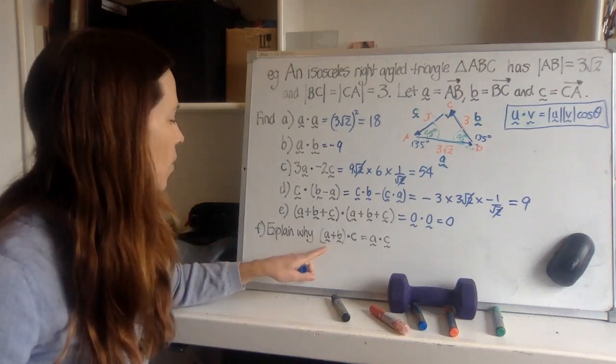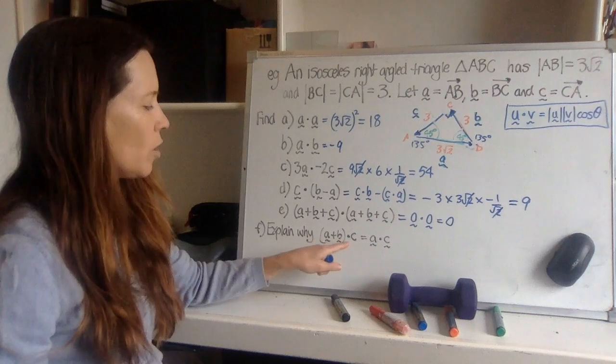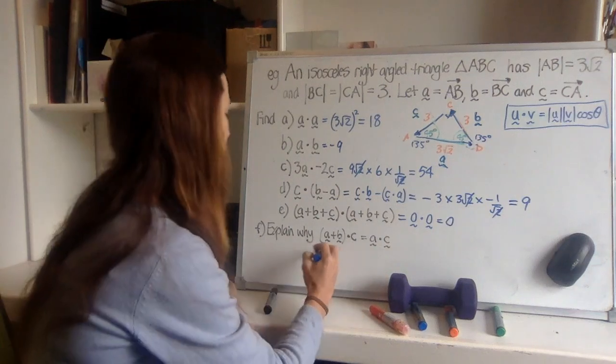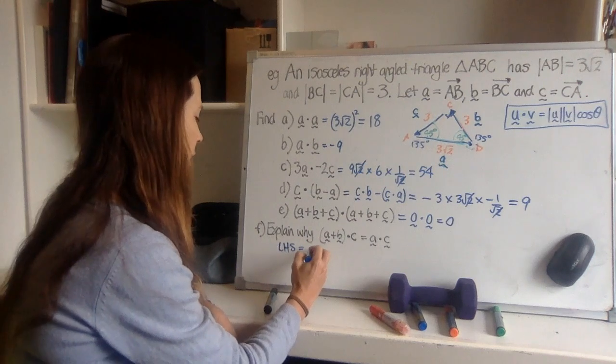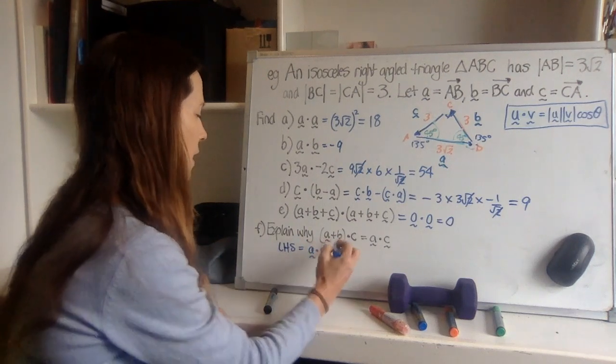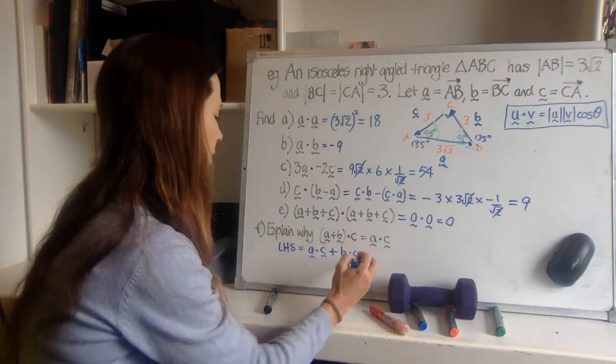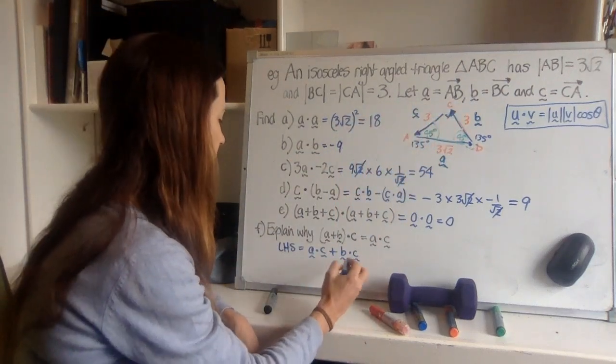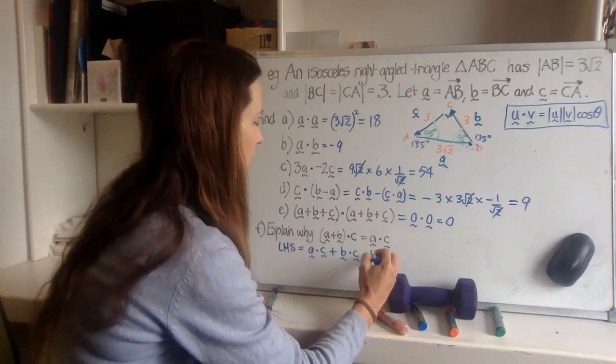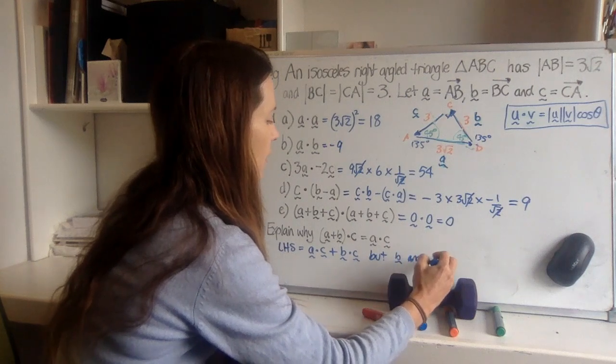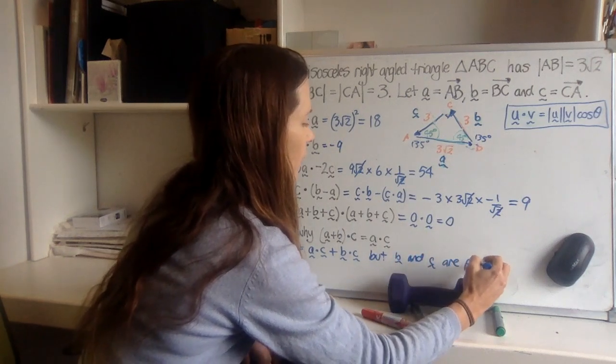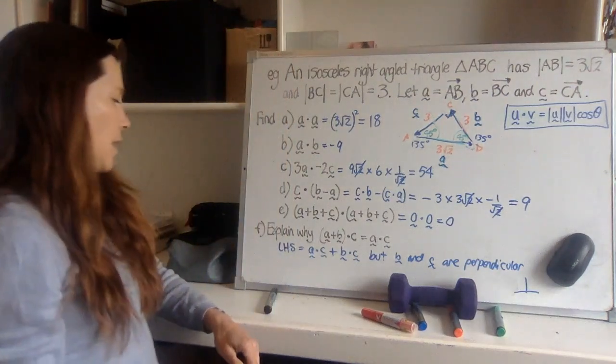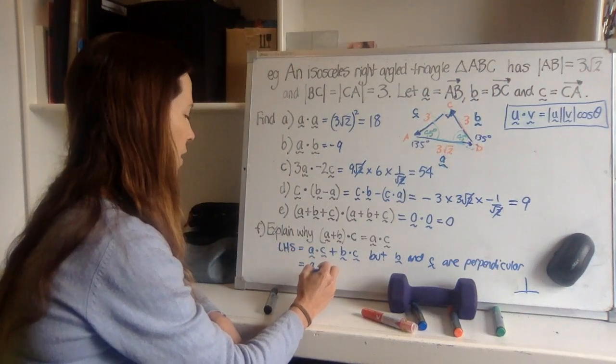Alright, last question. Explain why the vector a plus b dot c is going to equal this. Well, again, we can use our distributive law and say that we've got the left hand side is equal to a dot c plus b dot c. And we can, if we look at our picture, b dot c, well, they're perpendicular lines. So they're going to equal zero. So you could write that, I suppose, it says explain. So I guess I'd say b and c are perpendicular. Now you can write that out in words, or you could use that perpendicular symbol, which looks sort of like a t. Therefore, the left hand side equals just a dot c, which is equal to the right hand side.